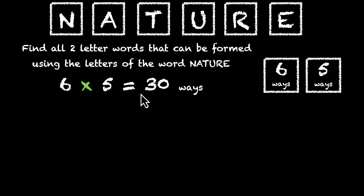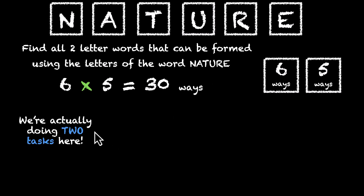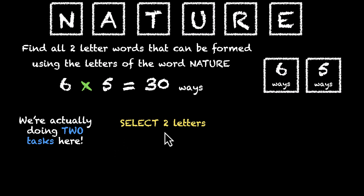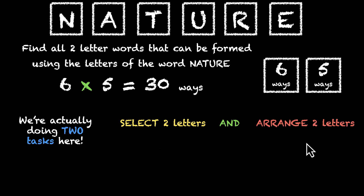We can form 30 two-letter words using the letters of the word nature. But if we think about it, we're actually doing two tasks. First we're selecting two letters out of these six, and then we're arranging those selected two letters.